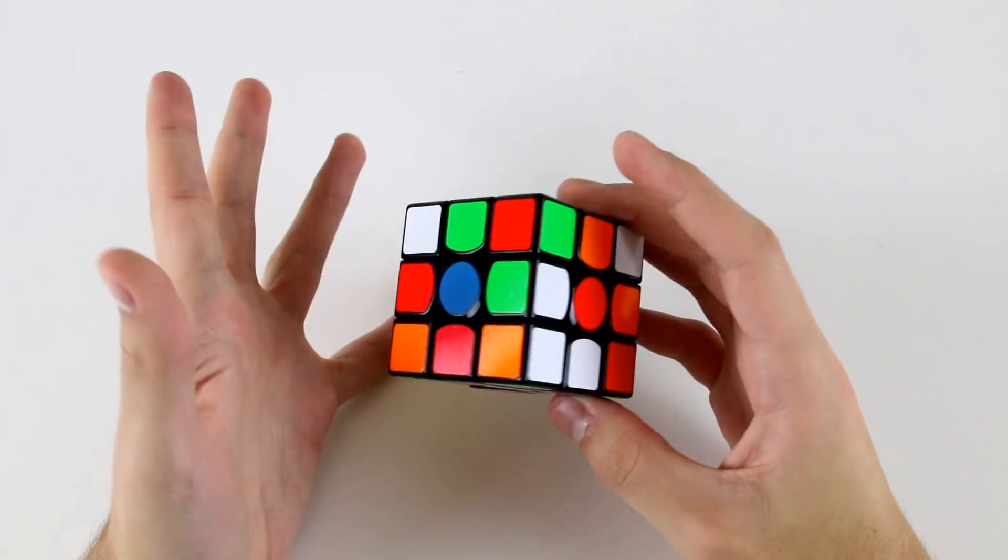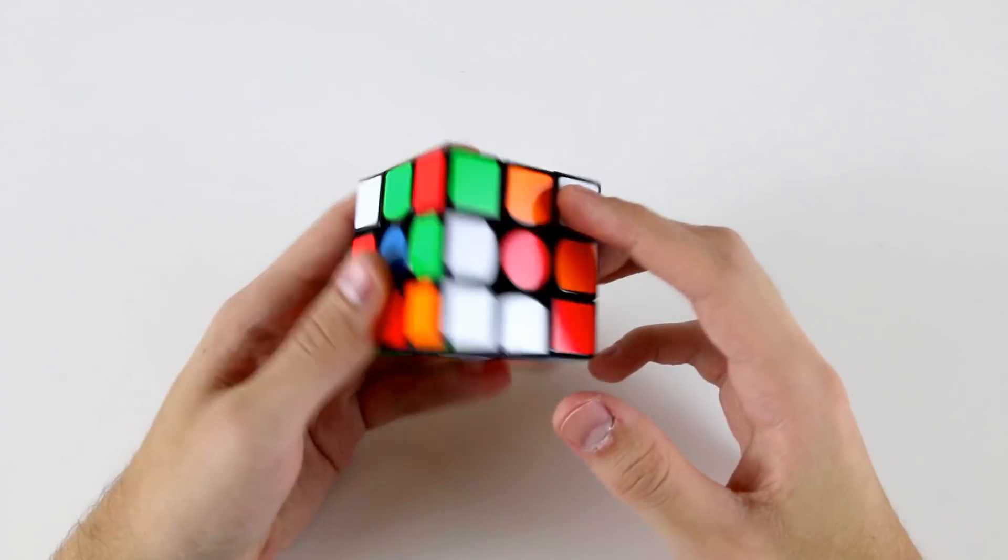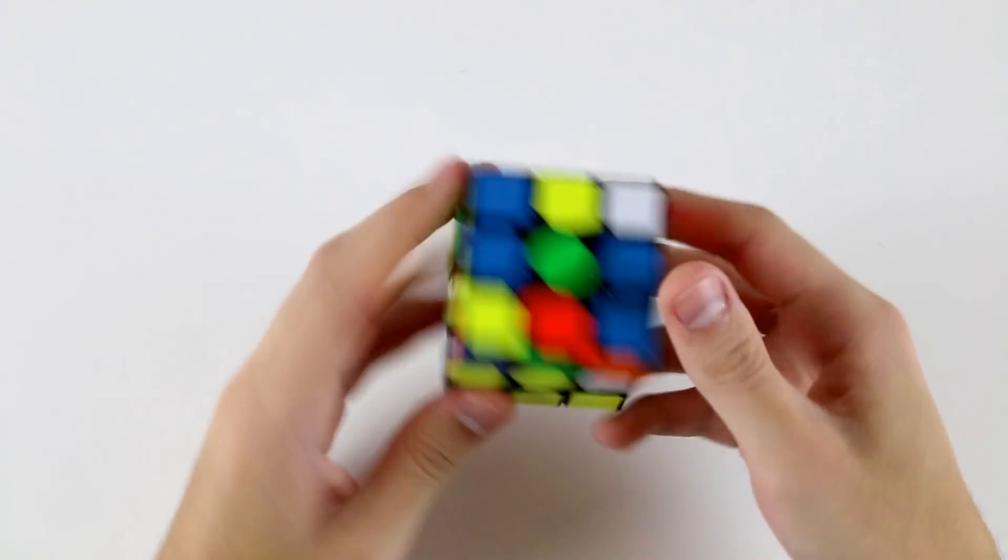Welcome to some more advanced example solves. We're going to start out with the white cross solves even though this yellow is really easy on this scramble.